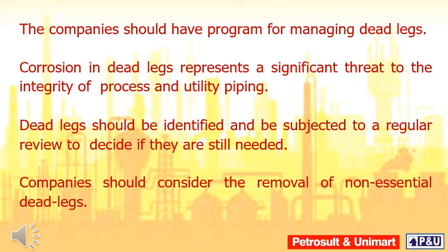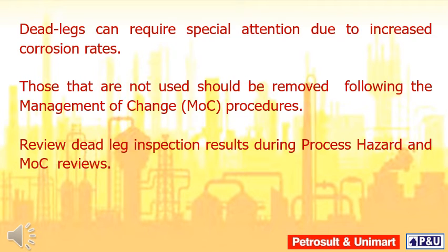Companies should have a program for managing dead legs. Corrosion in dead legs represents a significant threat to the integrity of process and utility piping. Dead legs should be identified and subjected to a regular review to decide if they are still needed. Companies should consider the removal of non-essential dead legs. Those that are not used should be removed following the management of change procedures.